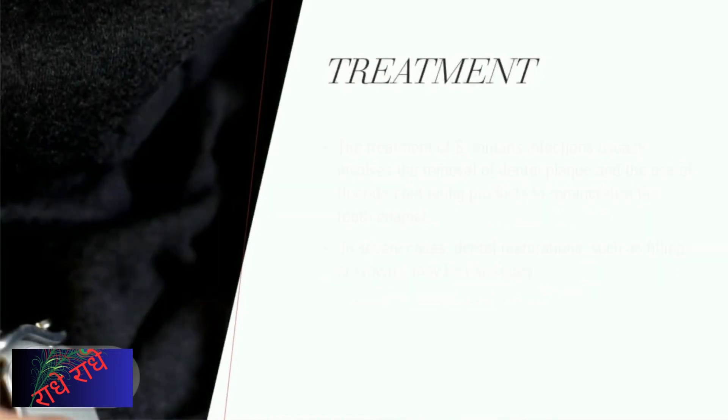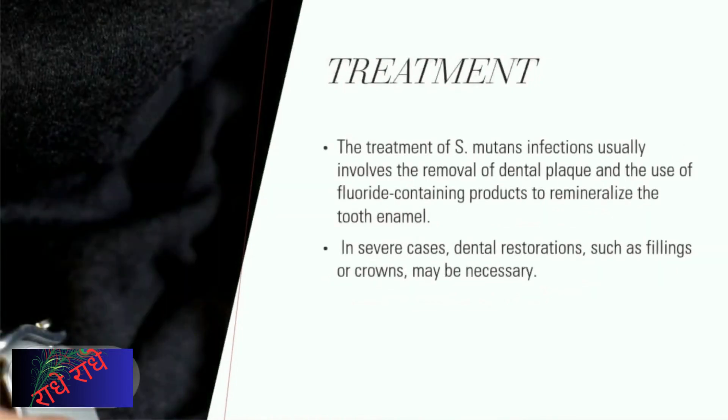The main treatment for S. mutans infections involves removal of dental plaque paired with use of fluoride-containing products to remineralize tooth enamel in order to stop potential further damage. In cases of more severe infections, dental restorations may be necessary to prevent spread of the infection while helping restore the tooth to its original condition.